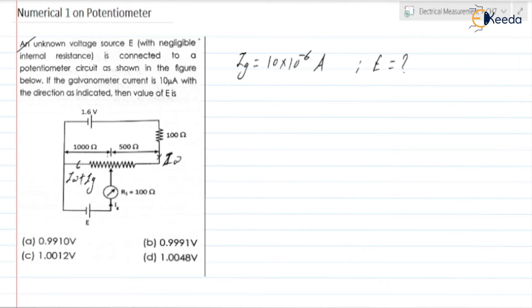Now can we apply KVL to this loop, upper loop? Yes, we can write KVL to upper loop or you can say loop 1. So we can write it is plus 1.6 minus 100 into Iw minus 500 into Iw.